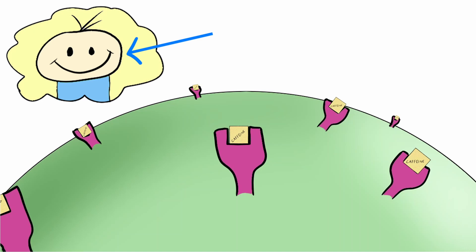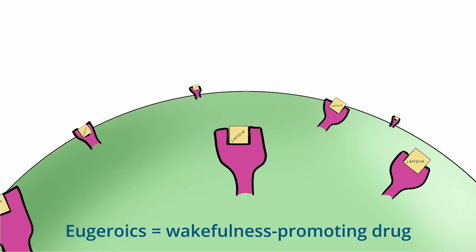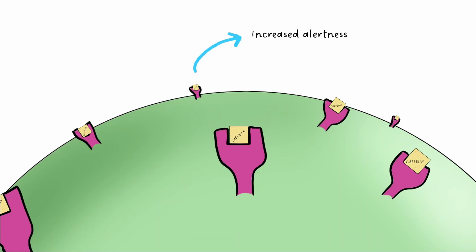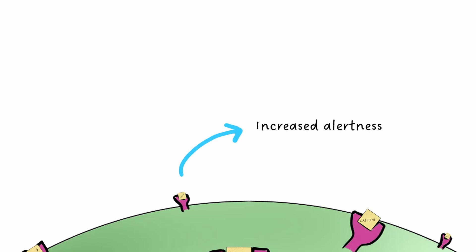Because of this, caffeine belongs to a class of drugs called eugeroics, meaning a wakefulness-promoting drug. The increased alertness that we feel from caffeine is one of the reasons it's so popular across the globe.